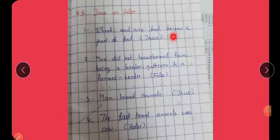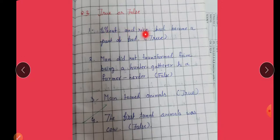True or false? Question number 3. Wheat and rice had become a part of food. True.